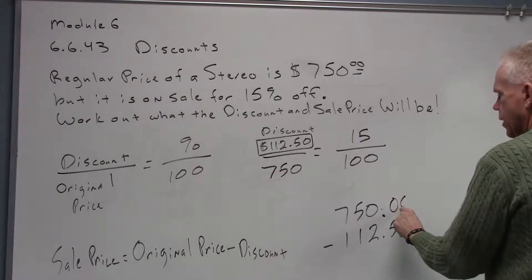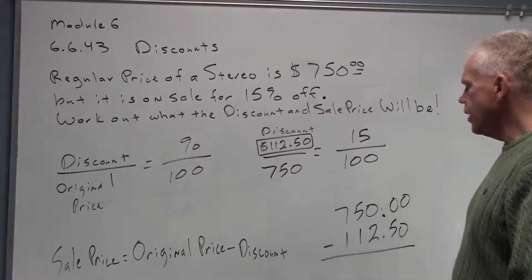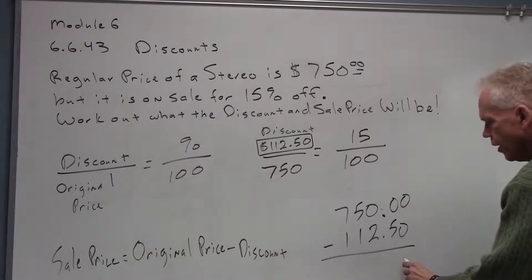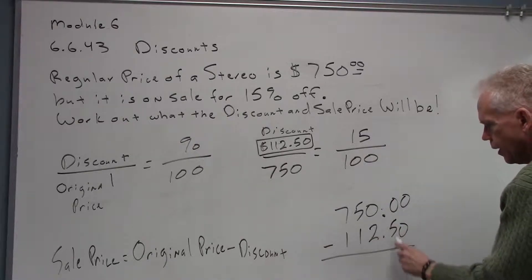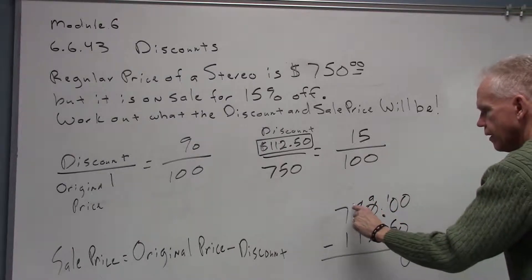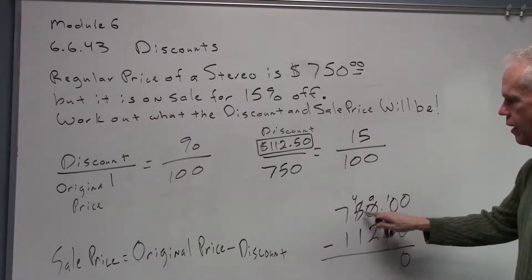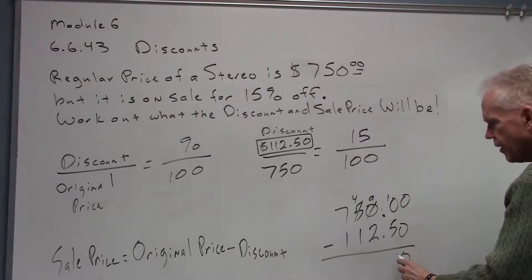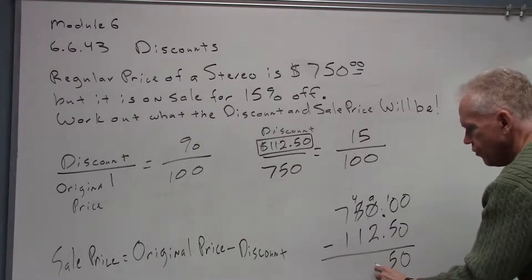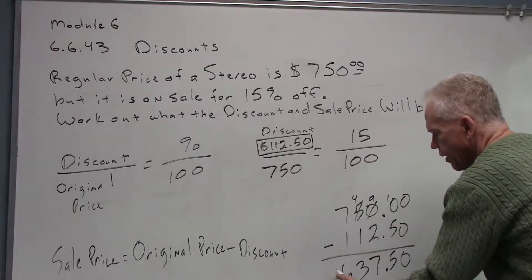Let's work this out longhand to practice subtracting decimals. Original price minus discount gives us our sale price. Zero minus zero is zero — we need to borrow, so that becomes a 10, the next column goes to nine, and that one goes to four. We borrowed off the five essentially, making this a nine and making this a 10. Ten minus five is five; decimal point lined up; nine minus two is seven; four minus one is three; seven minus one is six. That gives us $637.50.